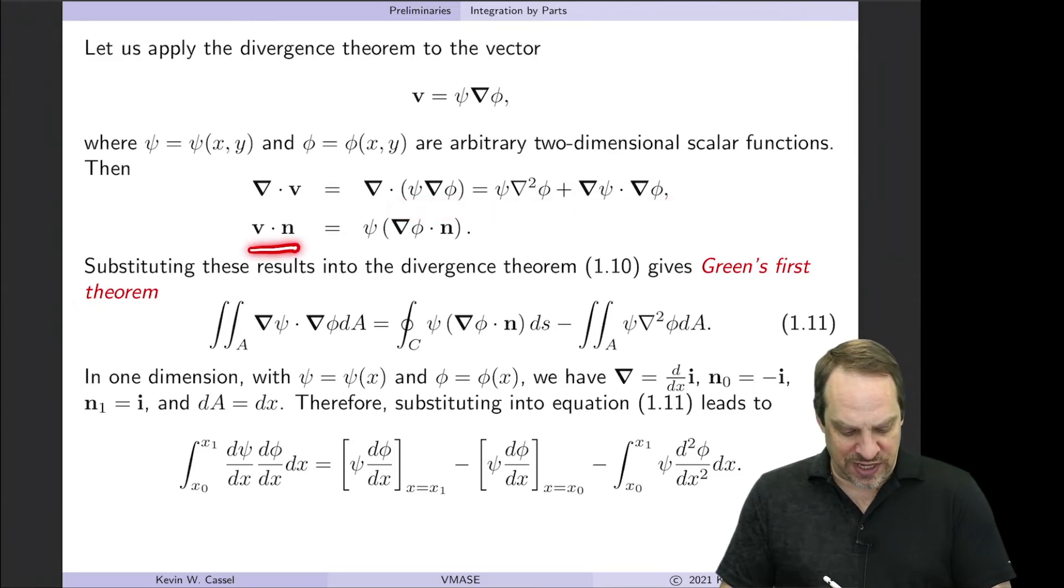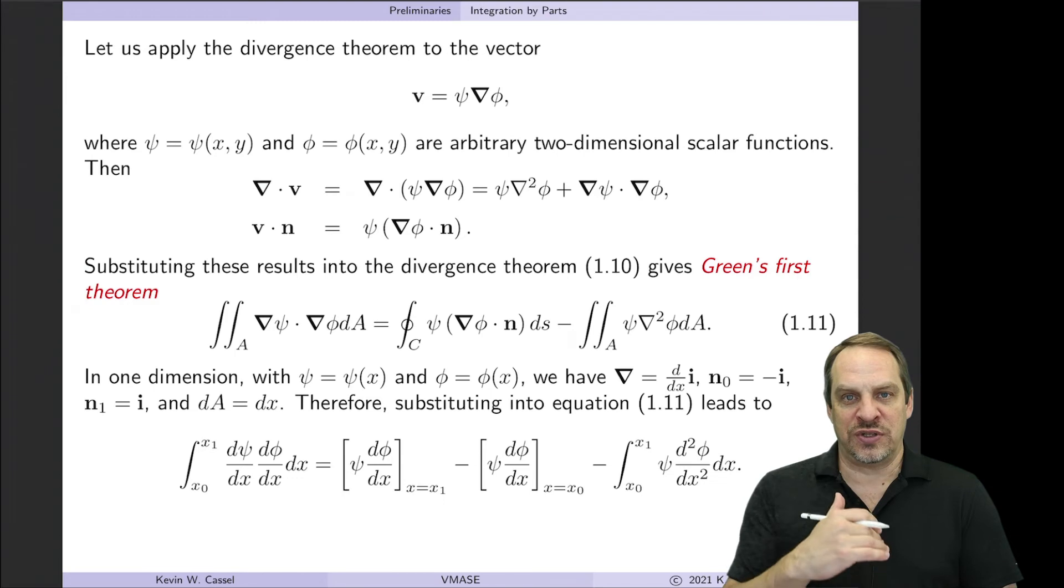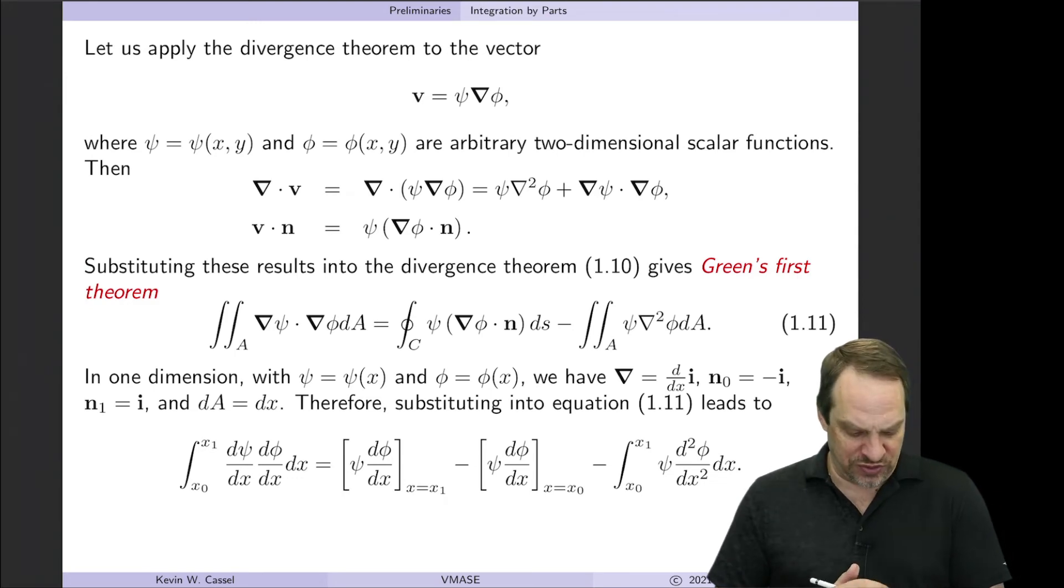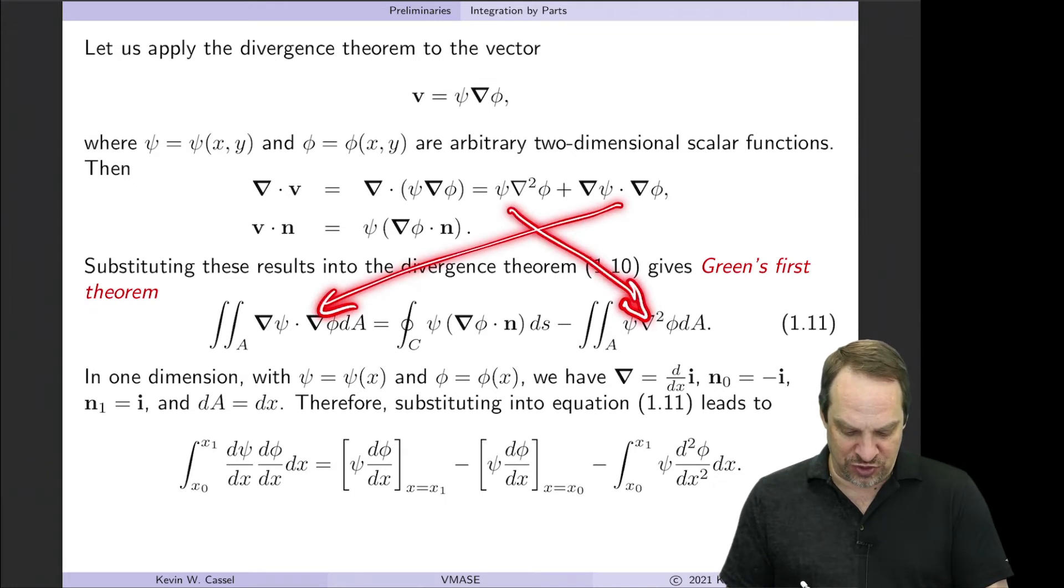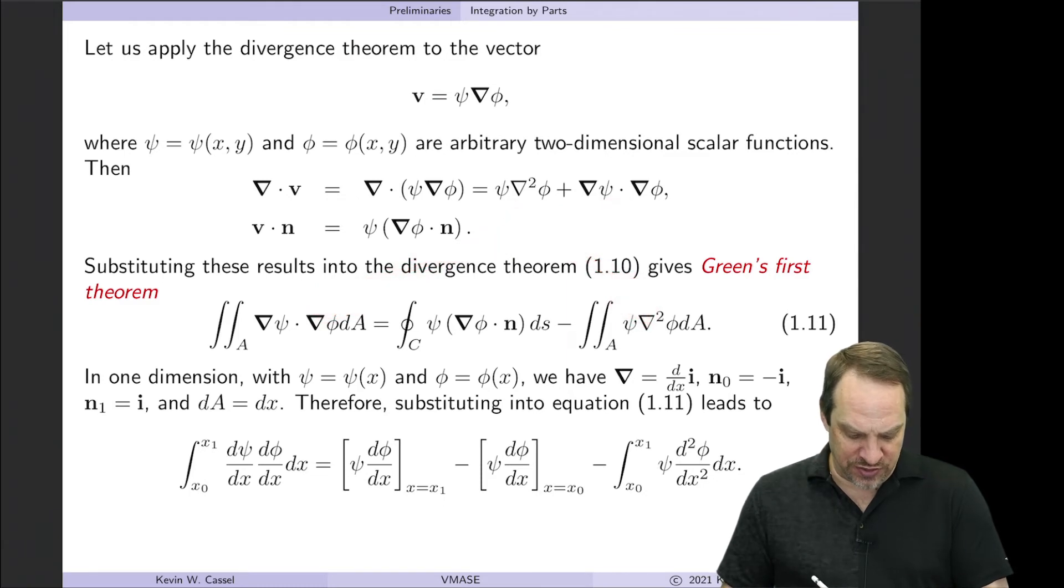Now V·n. V again is ψ∇φ. So that's ψ∇φ dotted with n. So let's substitute those into the left and right hand sides of those integrals. So on the left we have the ∇·V. So we get this term and this term here and here. Those are the integral terms. And then on the right we have the integral over C of V·n. Well V·n is this expression, so we have that here. That's known as Green's first theorem, and that's also a general theorem in vector calculus.